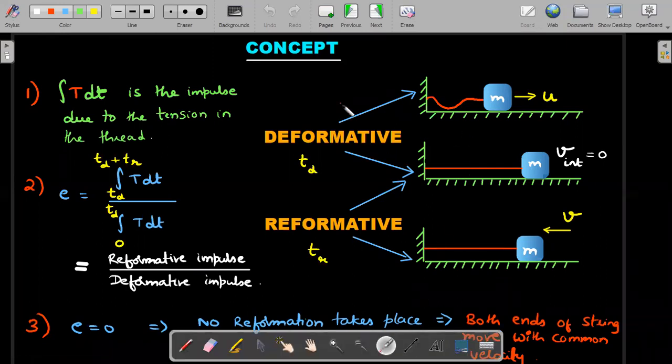A lot of things on the screen, so don't get scared. Just follow my lead. The integral t dt is the impulse due to the tension in the thread. If the tension in a thread is t, integration of t over time is called the impulse due to tension in the thread. Keep this in mind for our discussion.